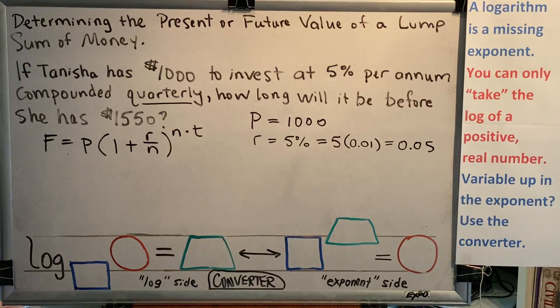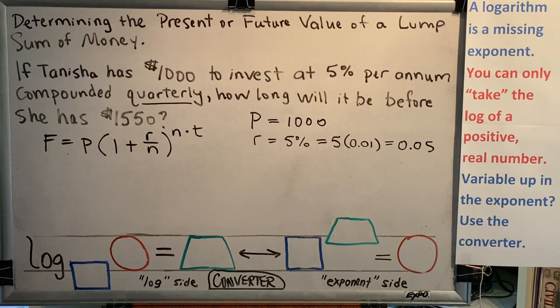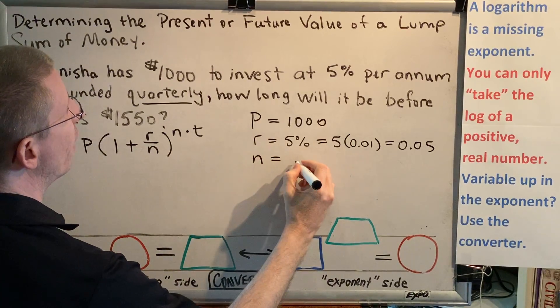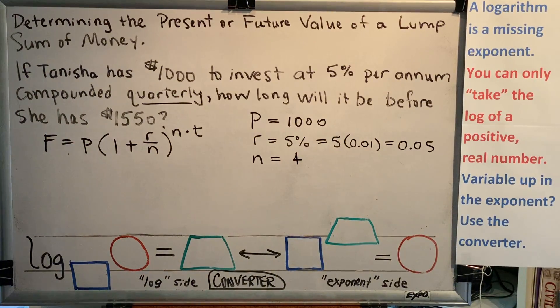Next, we continue reading. Compounded quarterly. This tells me that since there are 4 quarters in a year, the account will receive money 4 times in a year, which tells me the value of N. N, the number of times in a year that the account receives money is 4.